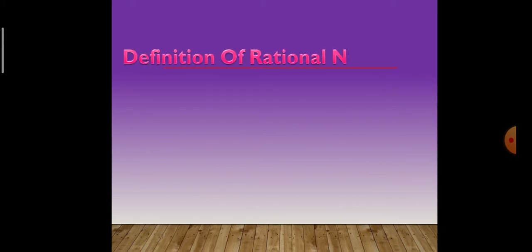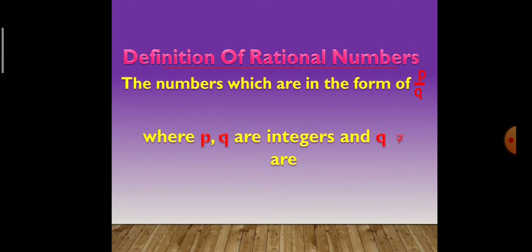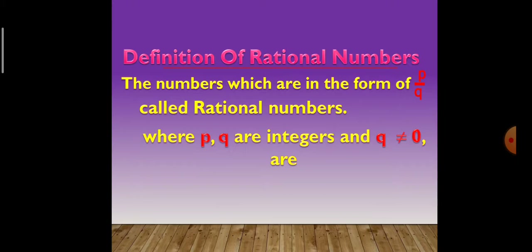Now, definition of Rational Numbers. What is a rational number? The numbers which are in the form of P by Q, where P and Q are integers and Q is not equal to 0, are called rational numbers. The set of rational numbers is denoted by Q.